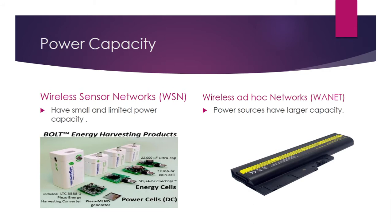In wireless sensor networks, we have limited and small power capacity — small batteries embedded into these sensing devices. In wireless ad-hoc networks, we have larger batteries. So comparing the two, the power capacity of wireless ad-hoc networks is bigger than that of wireless sensor networks.